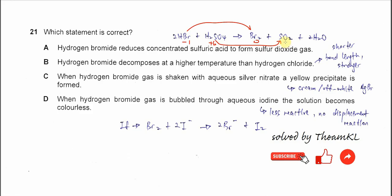So A is the correct statement. Why is B wrong? Hydrogen bromide decomposes at a higher temperature than HCl. HCl will decompose at higher temperature because the HCl bond is shorter and stronger. It needs more energy, so B is wrong.